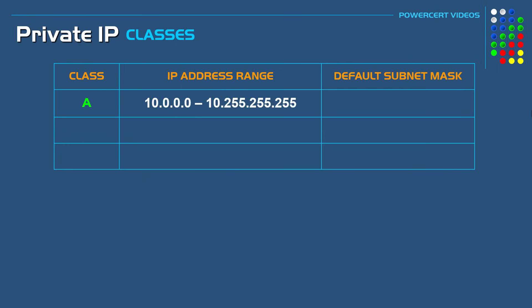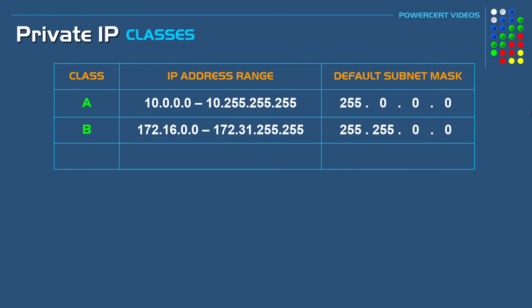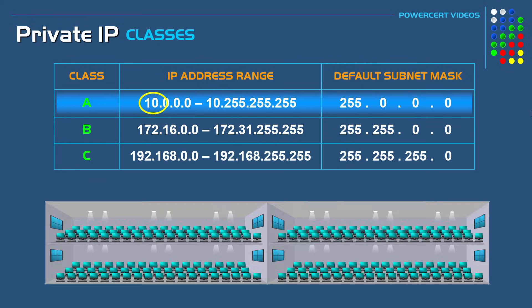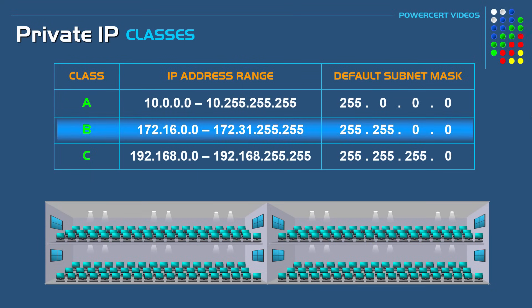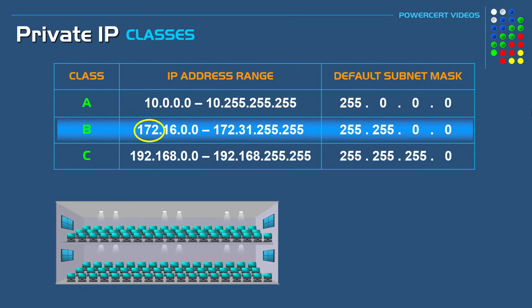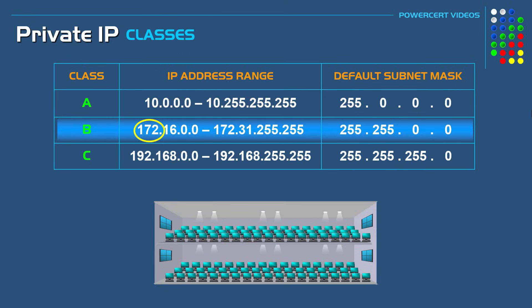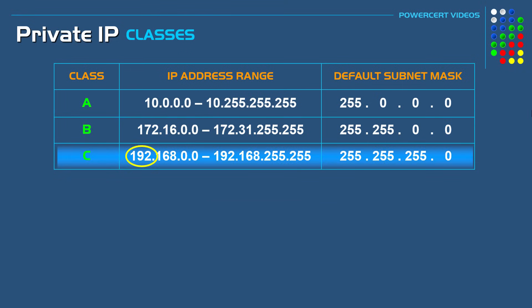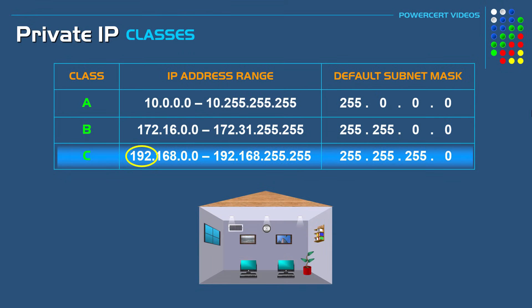Private IP addresses have three different classes, and these classes have different ranges. Class A private IP addresses start with the number 10 and are typically used for large organizations. Class B starts with 172 and is typically used in medium-sized organizations. And Class C starts with 192 and is used in small organizations or homes. Class C is the most popular range of private IP addresses used.